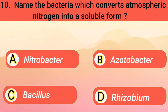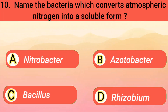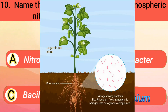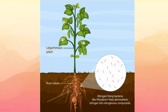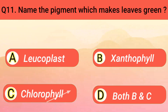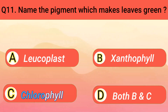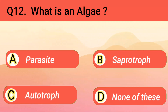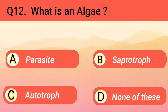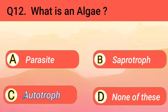Name the bacteria which converts atmospheric nitrogen into a soluble form. Rhizobium. Name the pigment which makes leaves green. Chlorophyll. What is an algae? Autotroph.